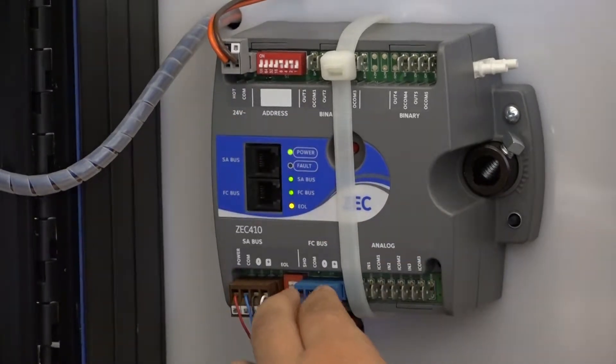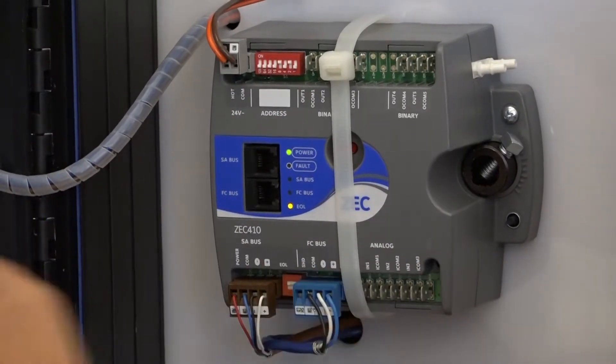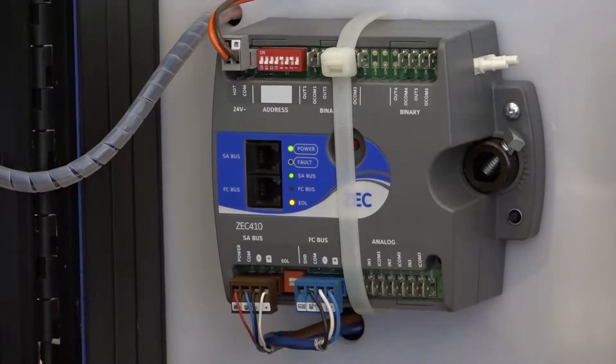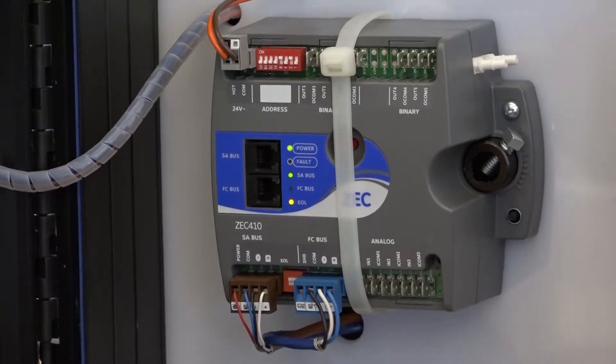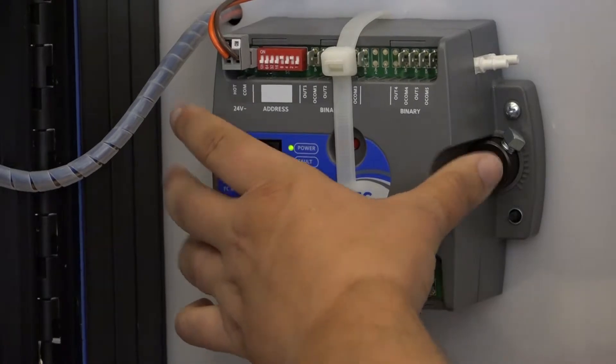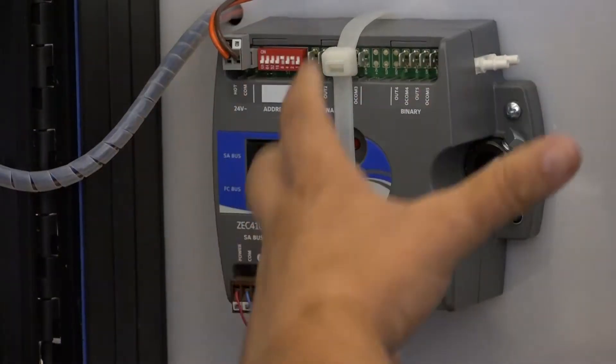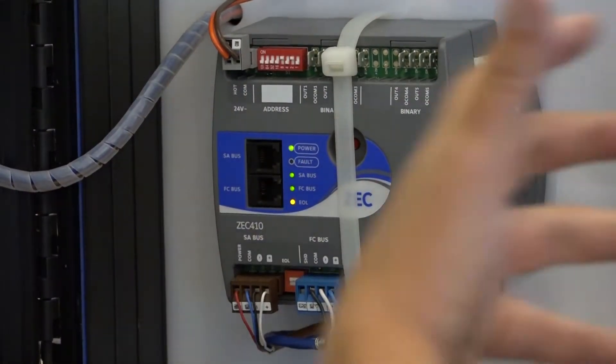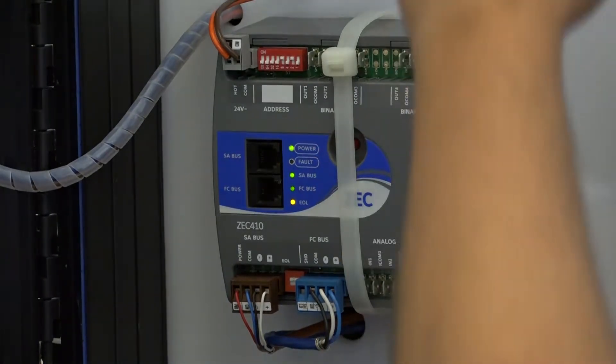These controllers wire up to that zone bus and only that zone bus. It does not wire to the system controller and they specifically wire to the zone bus of the system that is delivering the air to the box or to the dampers.